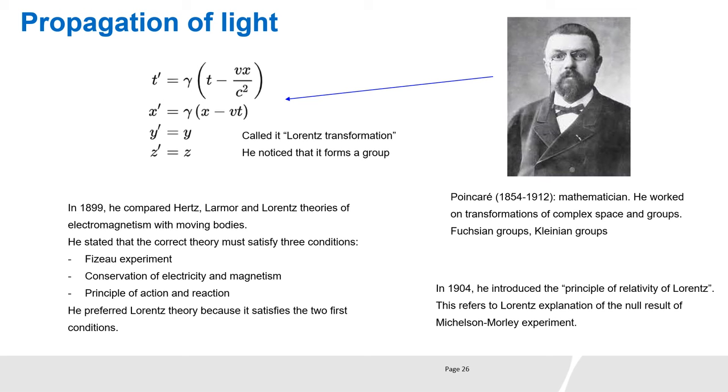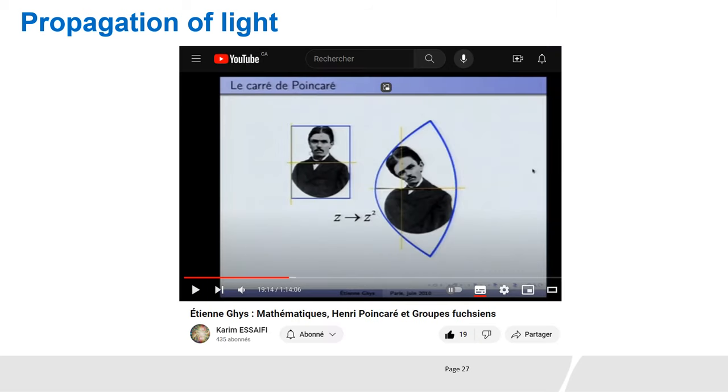Poincaré was a mathematician who worked on transformations of complex space and groups. He gave the names of Fuchsian groups and Kleinian groups, although it was Poincaré who made the main contributions on these groups. Poincaré called Lorentz transformation Voigt-Lorentz auxiliary variables and he noticed that this transformation formed a group. Among several theories for electromagnetism with moving bodies, Poincaré preferred Lorentz's approach because it accounts for the results of Michelson-Morley experiments, and he called this fact the principle of relativity of Lorentz. You can find on YouTube videos about Poincaré's work on mathematical transformations and groups.